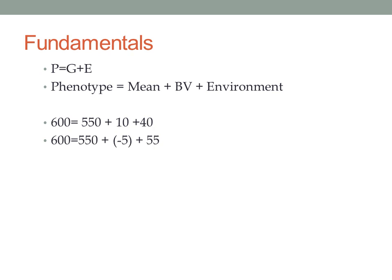So let's start with the fundamentals. Phenotype is really the sum of genetic effects plus environmental effects. If we delve deeper into that, the phenotype or what we see is really the cumulative effect of a population average — what's the mean for a particular trait — plus an animal's genetic merit or their breeding value, plus any environmental effects.